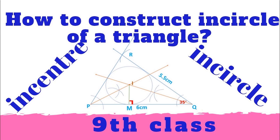The incenter is the point of concurrence of all the angle bisectors of a triangle. The circle which touches all the sides of a triangle is called the incircle of the triangle, and the center of that circle is called the incenter of the triangle. The incenter is denoted by the letter I.